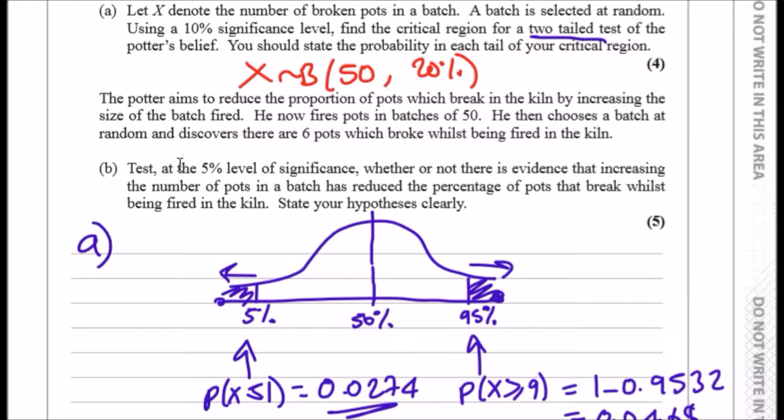Now let's have a look. Test at the 5% level of significance whether or not there is evidence that increasing the number of pots in a batch has reduced the percentage of pots that break whilst being fired in the kiln. Just to recap, 6 over 50 is the same as 12%, so technically it's under 20%, so we need to check if this statement is actually true.